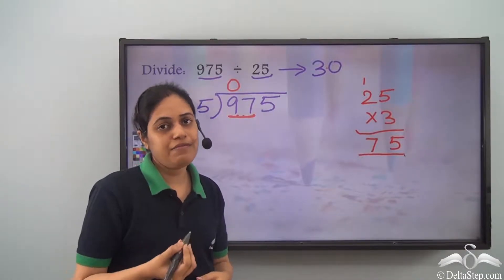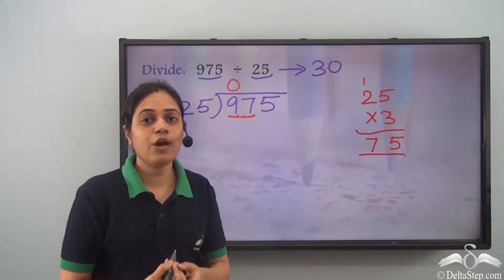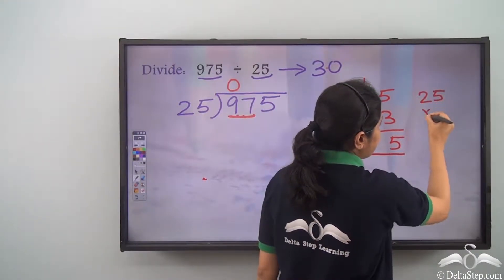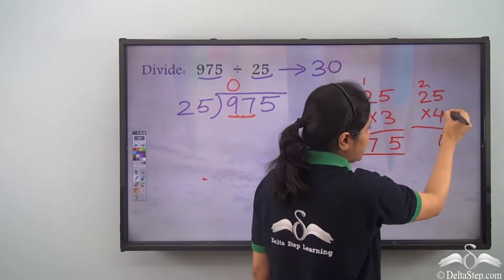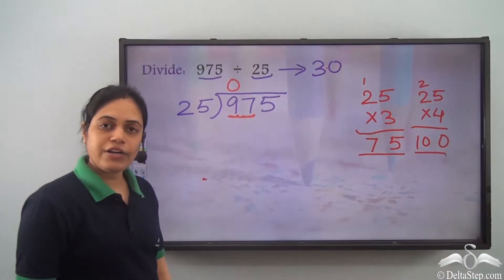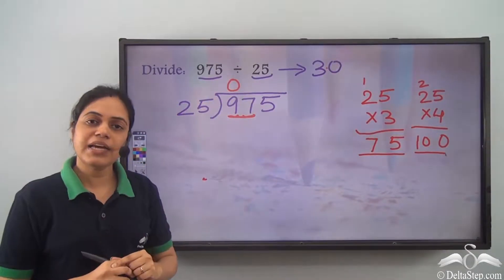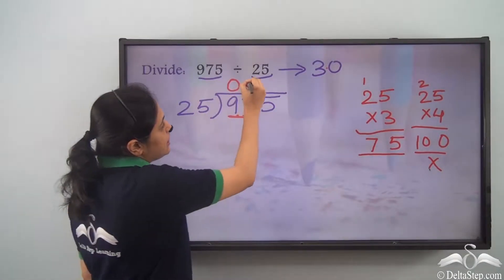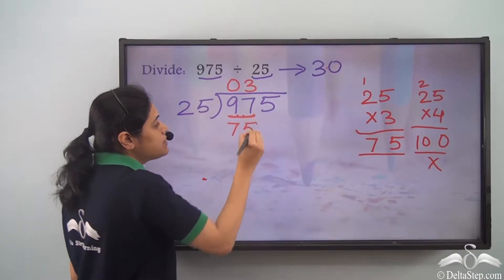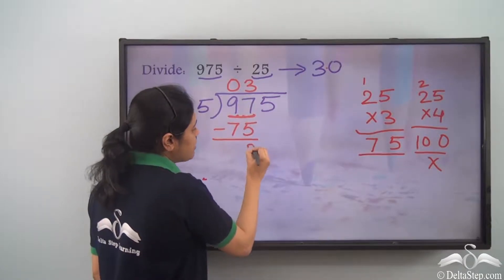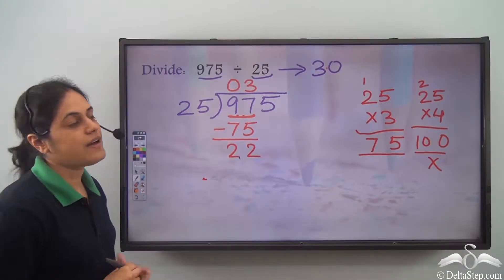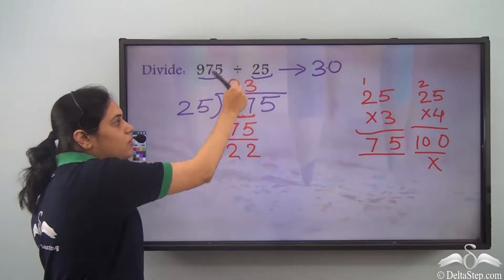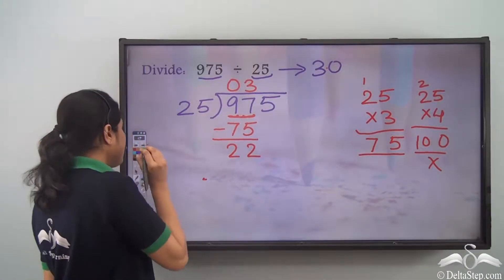Since 75 is less than 97, maybe 25 goes 4 times into 97. I check 25 × 4: 4 into 5 is 20, write 0 carry 2; 4 into 2 is 8, plus 2 is 10. So 25 × 4 is 100. But 100 is greater than 97, so 25 does not go into 97 four times. Therefore 25 goes into 97 three times. I subtract: 97 minus 75 gives remainder 22, which is less than 25, confirming the quotient digit is 3.